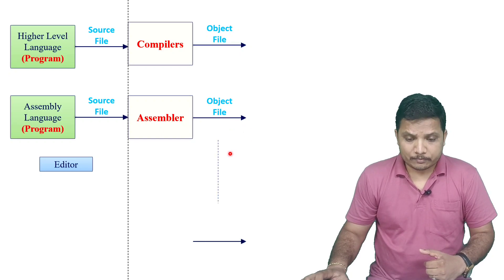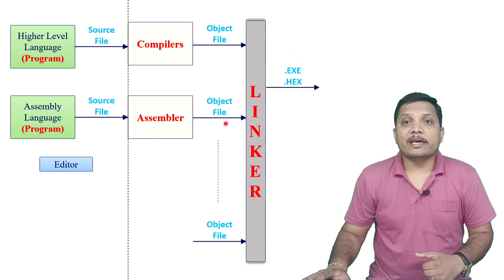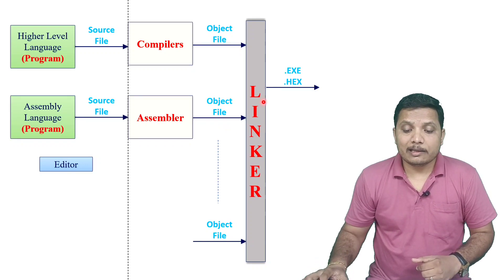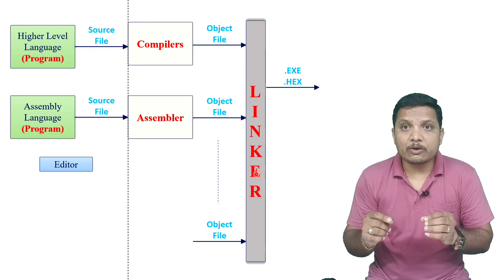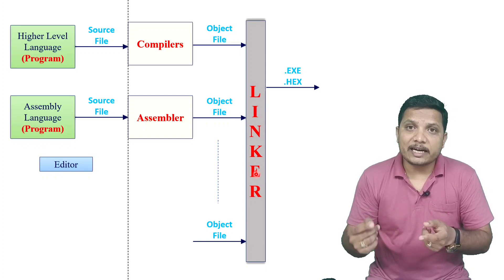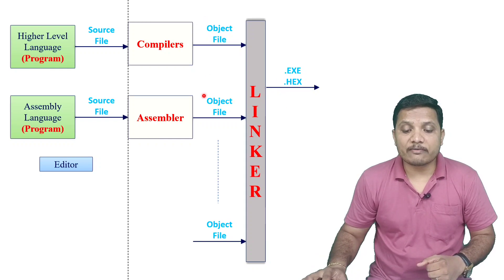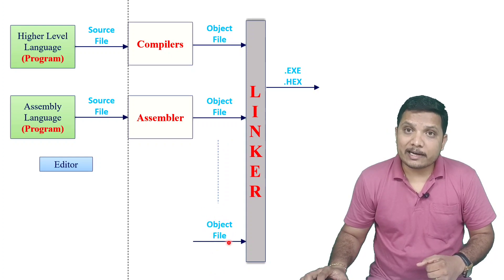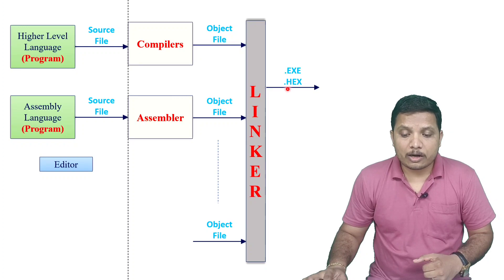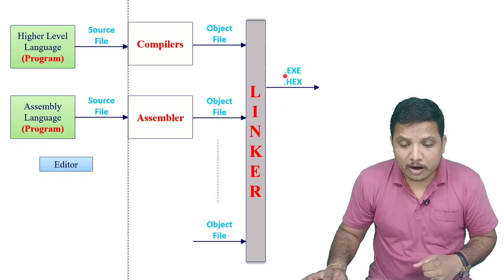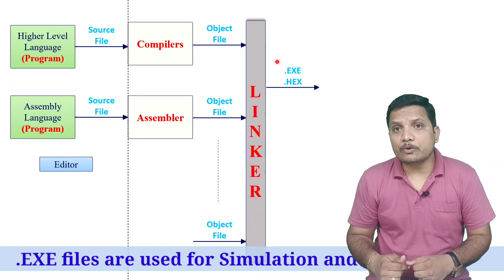Next is the linker. If we have many object files, the linker links them with a library of machine code and generates an executable file or a .hex file. The linker combines object files with well-defined machine code libraries to produce the .exe or .hex output.